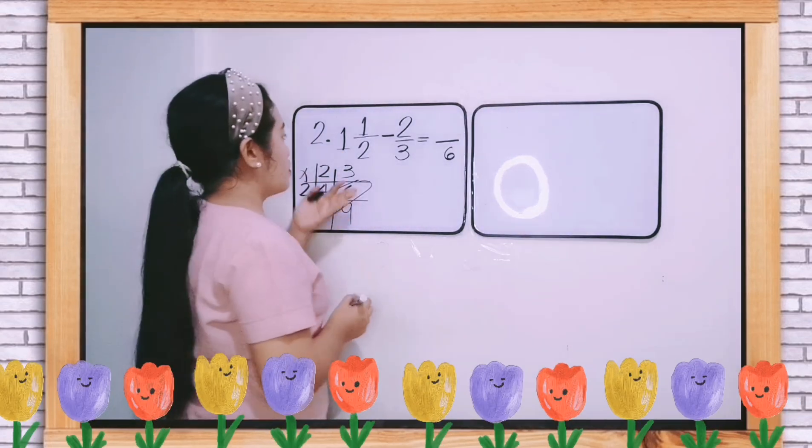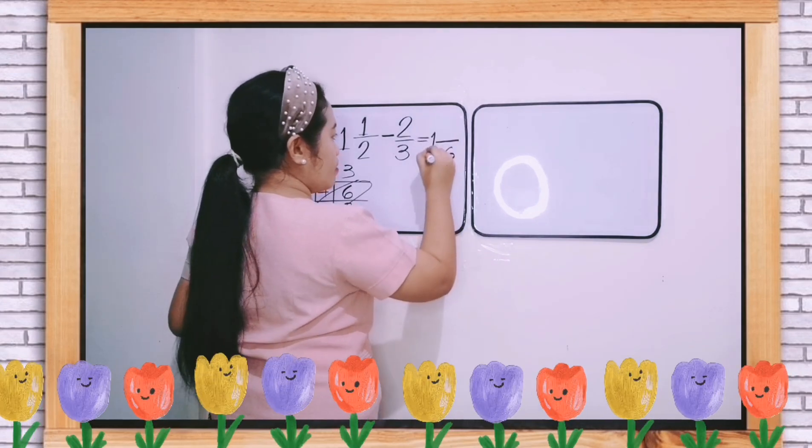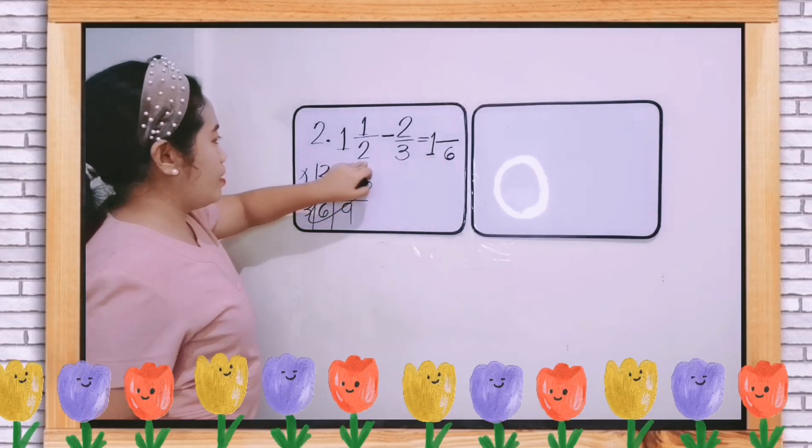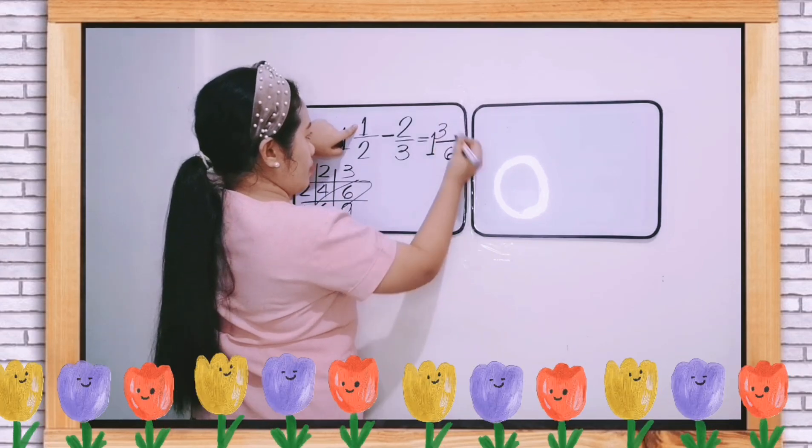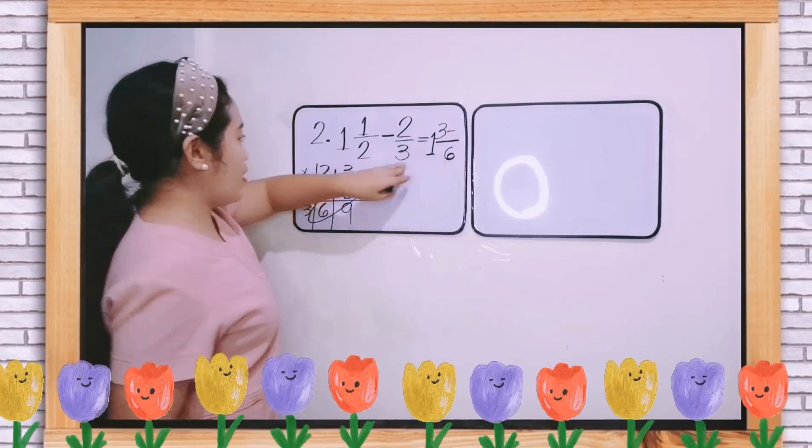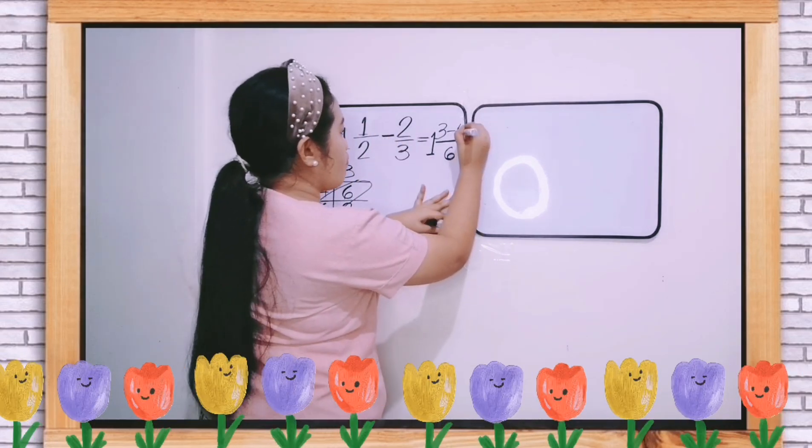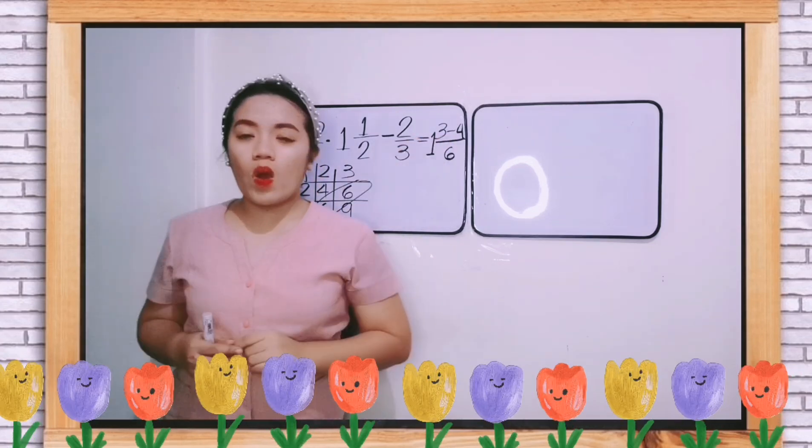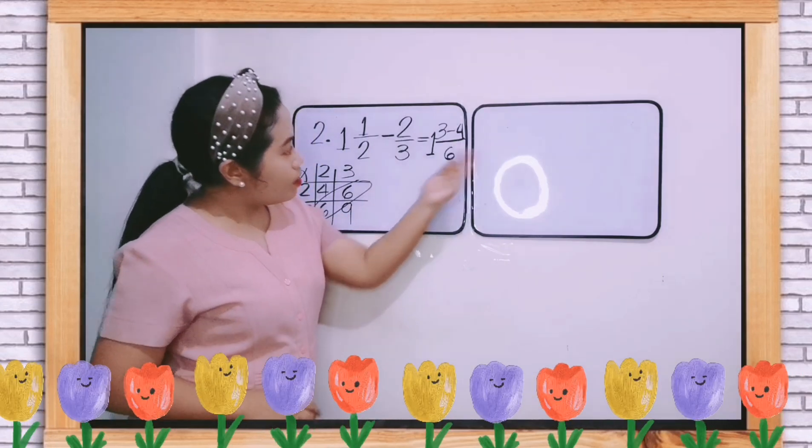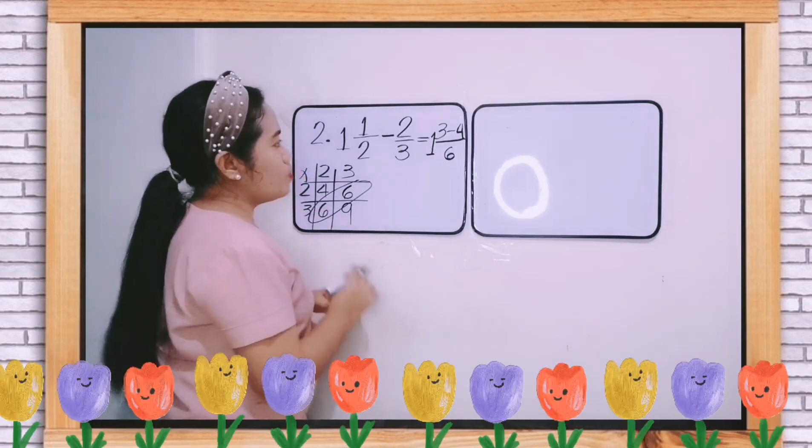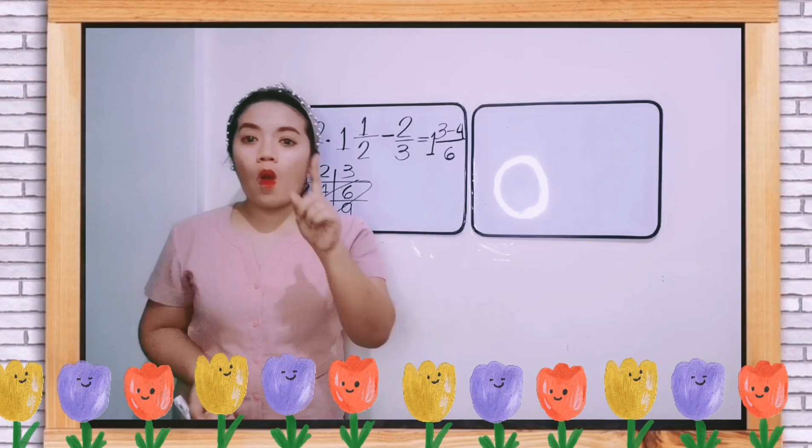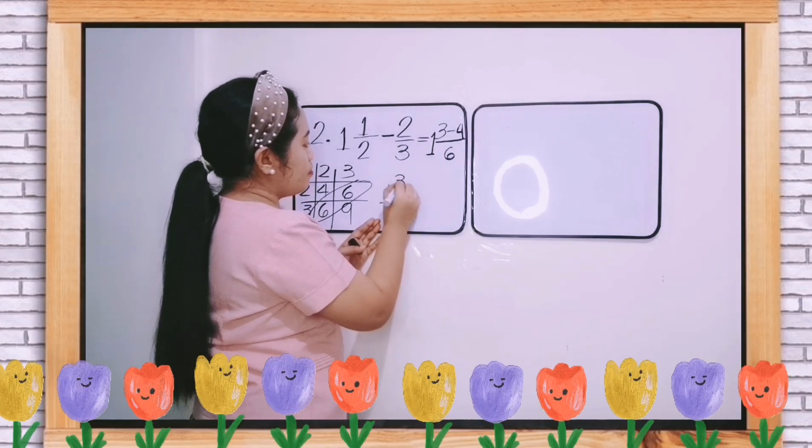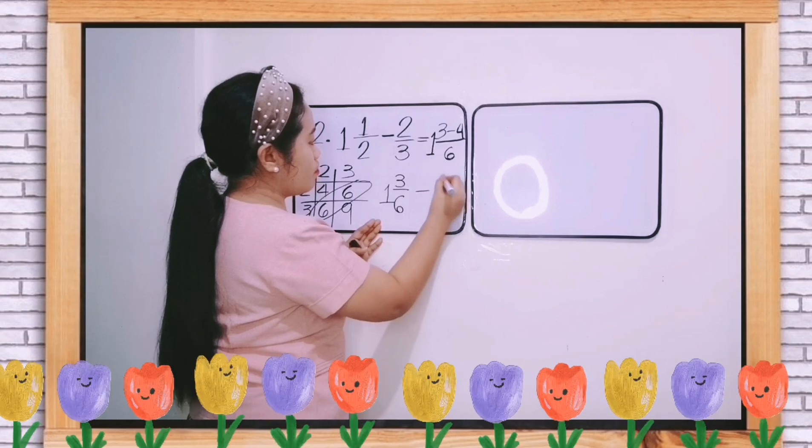So let us write the common denominator. This whole number, we will just write it. Now let us divide. 6 divided by 2 is 3 times 1, which is 3. Minus 6 divided by 3 is 2 times 2, which is 4. As you can see in our number sentence, the numerator for the first fraction is less than the second numerator. So we need to borrow 1 from our whole number. So let us separate this first. So 1, 3 over 6 minus 4 over 6.